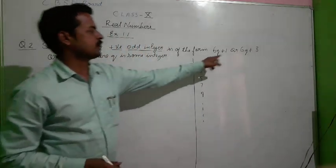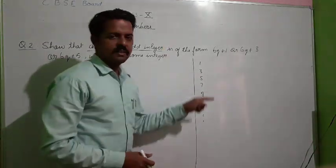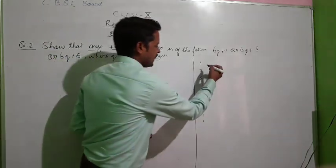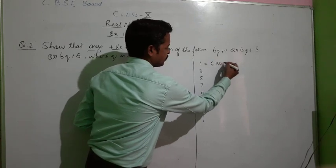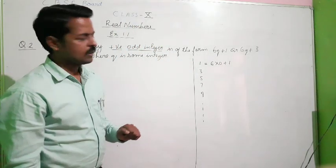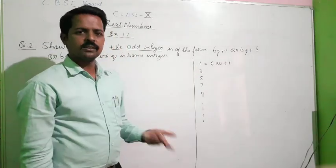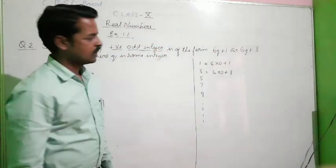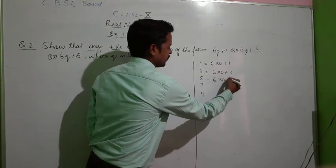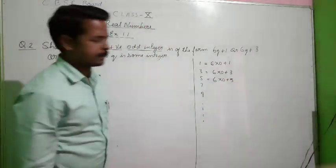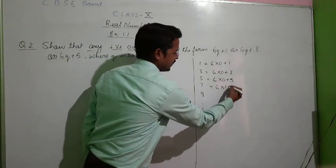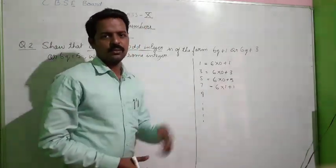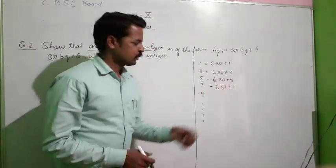Let us see — all odd numbers are in the form 6q+1, 6q+3, and so on. Can we represent 1 in the form 6 into something plus 1? Yes, we can write 1 as 6×0+1. Can we write 3 in the form 6q+1 or some similar form? Yes, we can write 3 as 6×0+3. Similarly, 5 can be written as 6×0+5. For 7, if you divide 7 by 6, we get 7 as 6×1+1.